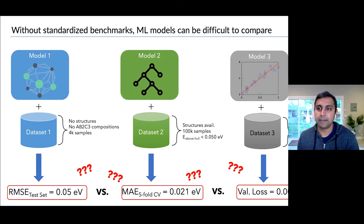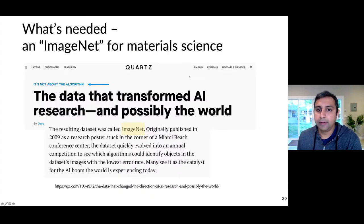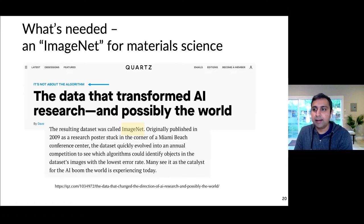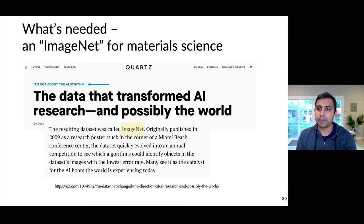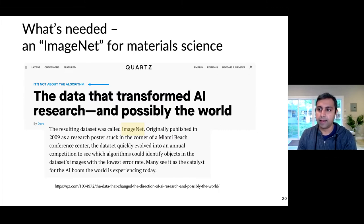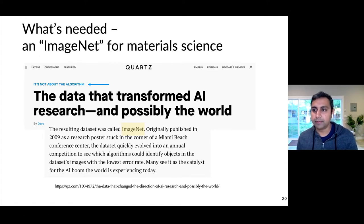In our opinion, what's needed is something like an ImageNet for materials science. ImageNet is a data set that started over 10 years ago, originally published as a research poster at a Miami Beach conference, and it has become the biggest and most important image analysis machine learning data set. There are always competitions to see how much better we can do at classification performance on ImageNet — a set of hand-labeled images where machine learning algorithms compete to automatically classify them as cats, dogs, trains, etc., as well as a human would.